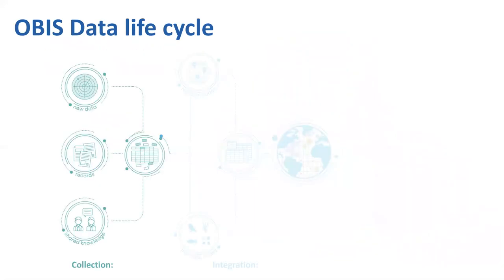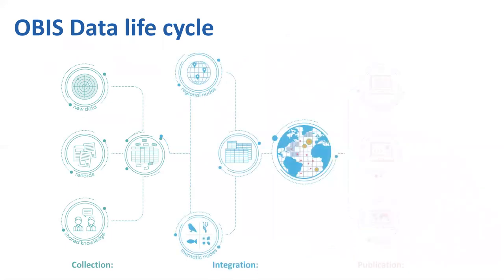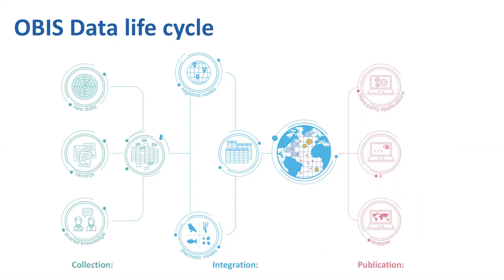It all starts with the over 1,000 data providers and/or data stewards who are willing to publish the data in the public domain. The data is standardized and quality-controlled at the 31 regional or thematic OBIS nodes, from where the central system harvests the data, performs an extra QC step, and publishes the integrated set. The API web service powers the OBIS mapper, the R package, and third-party applications, where data can be discovered and downloaded free of charge.